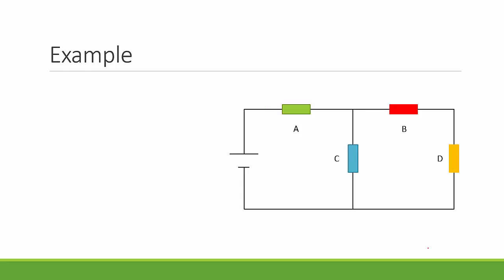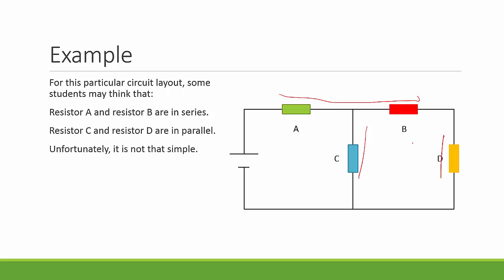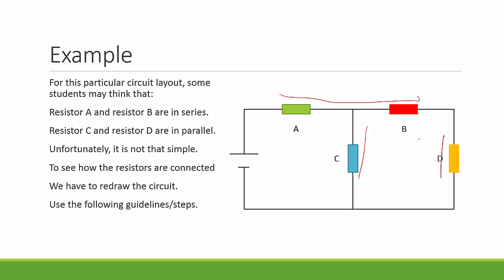Let's look at this circuit that seems simple. For this particular circuit layout, some students may think that resistor A and resistor B are in series since they are arranged in this manner, or that resistor C and resistor D are in parallel since they are arranged in this manner. Unfortunately, it's not that simple. To see how the resistors are connected, we have to redraw the circuit, using the following guidelines and steps.